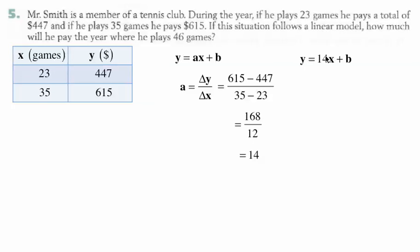So our new function is y equals 14x plus b. Now we just have to solve for the b. So we're going to take any two points, like 23, 447 or 35, 615, since we only have two points, and put in the x and corresponding y value. So I'm going to use x is 23 and therefore y equals 447.